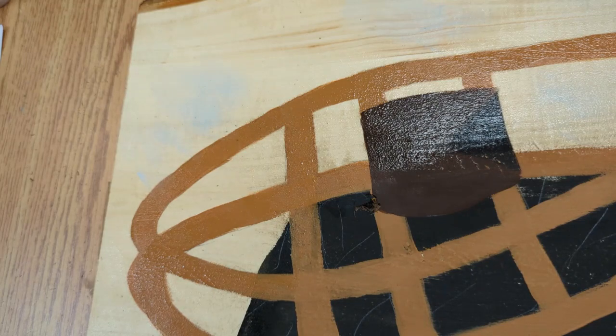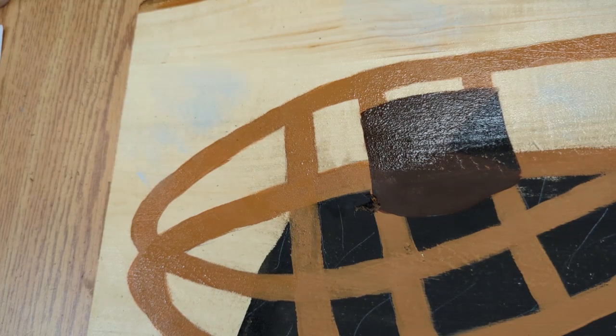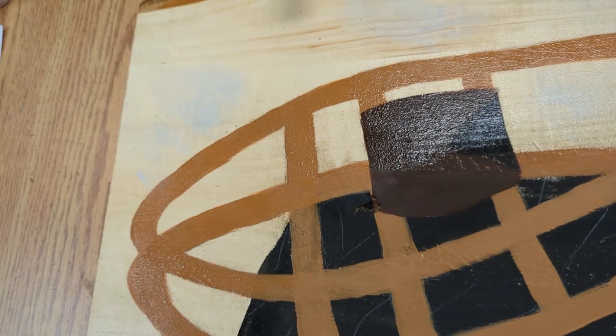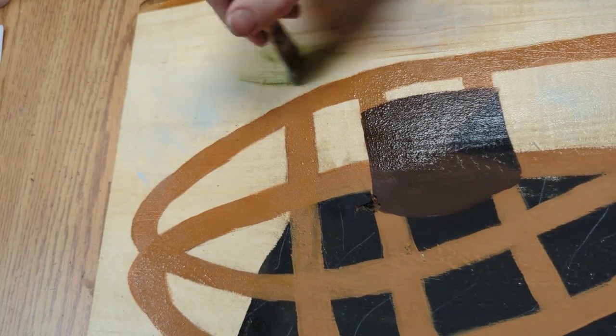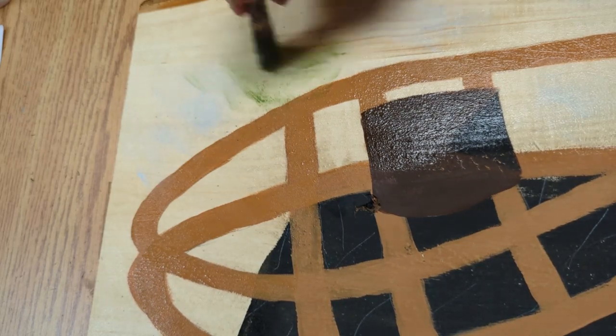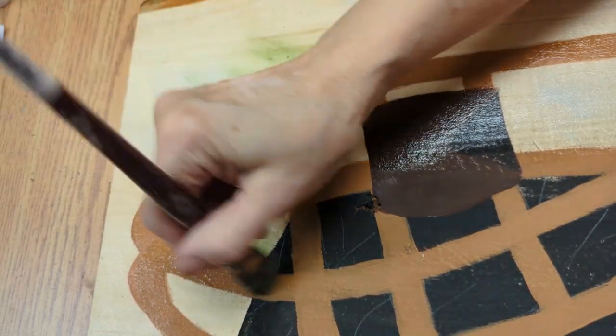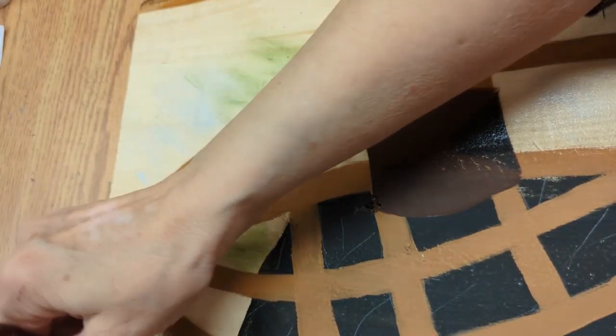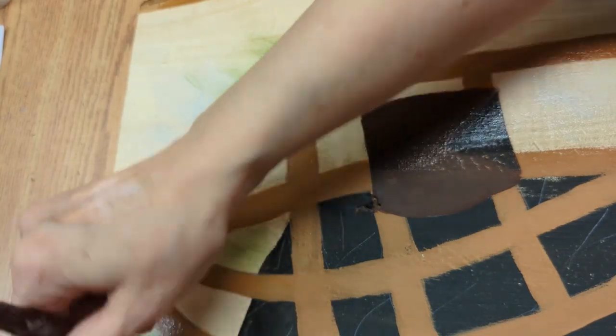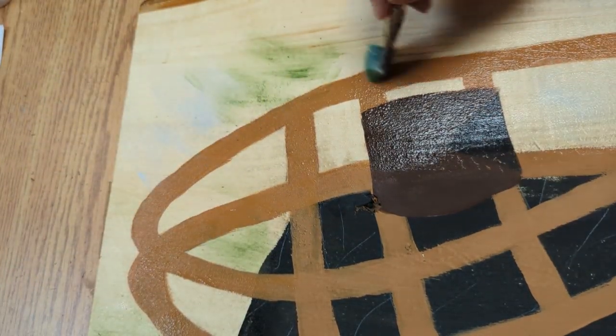I'll just give it a wipe on my towel, pick up a little bit of Plantation Pine. And you still want to make sure you have lots of gel on your brush. The gel is going to keep it sheer and transparent. So I'm just kind of going in a little bit of a slip slap motion.